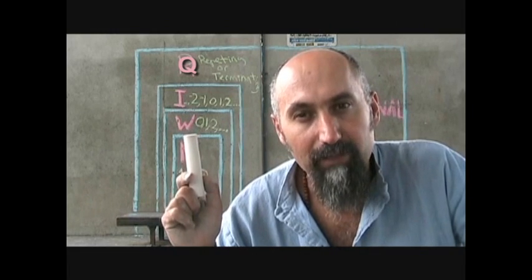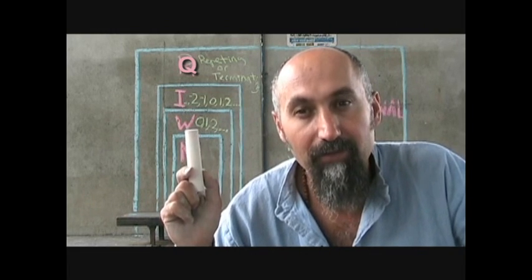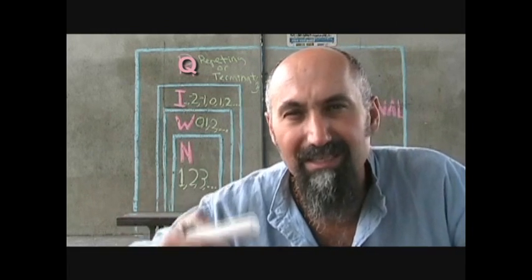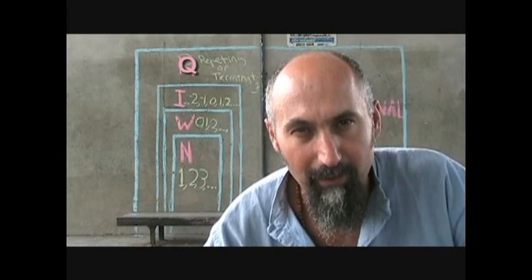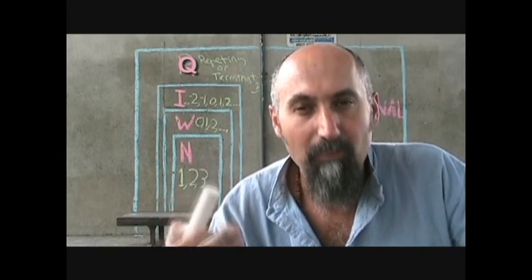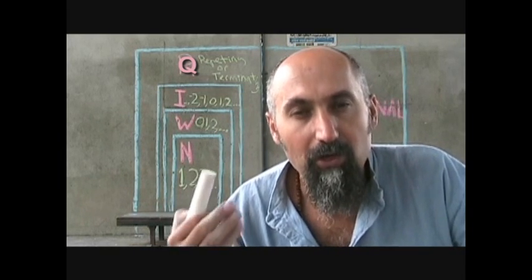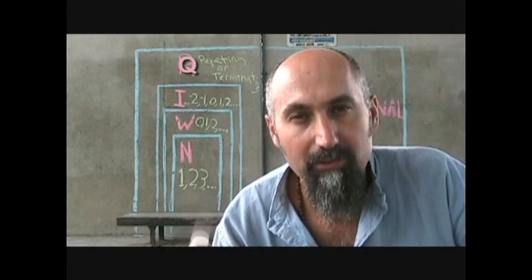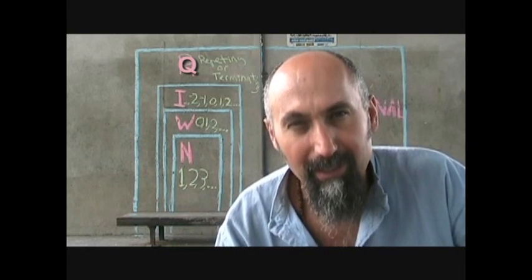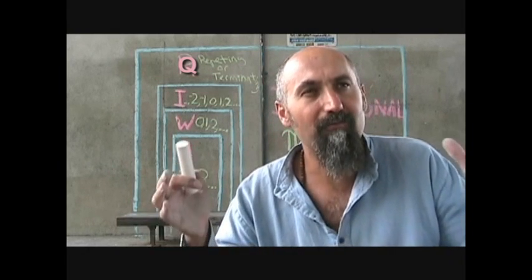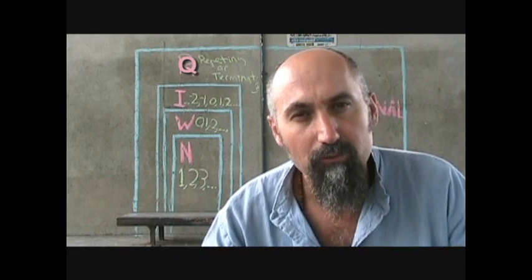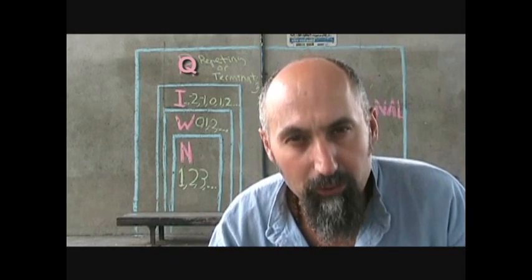It wasn't really a discovery because zero existed before. It was basically us getting smart enough to comprehend what zero meant — and we still don't fully comprehend it, actually. It was just finding something that didn't work out according to the rules that we knew before.